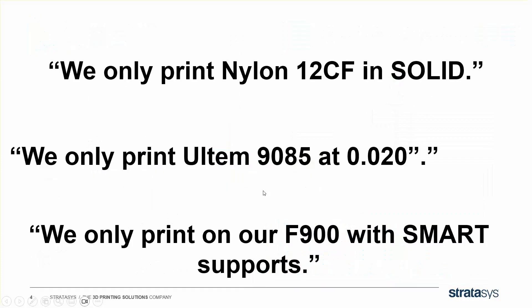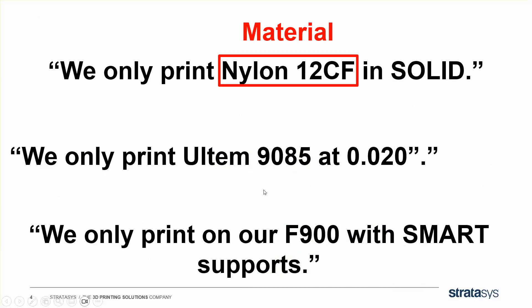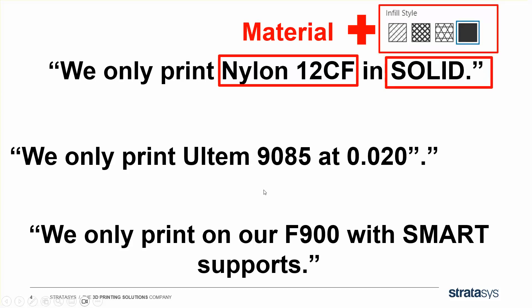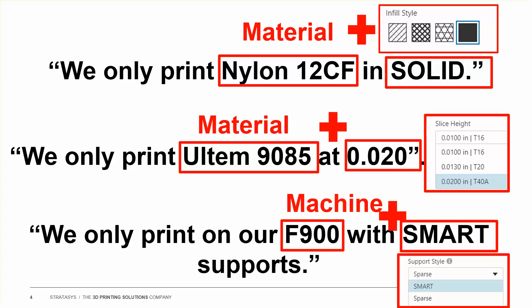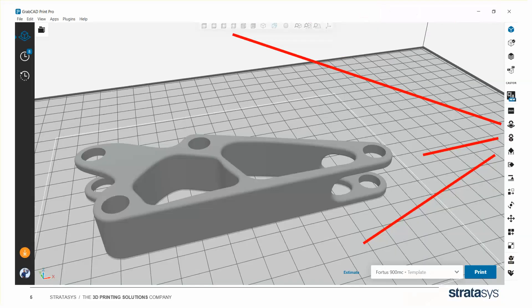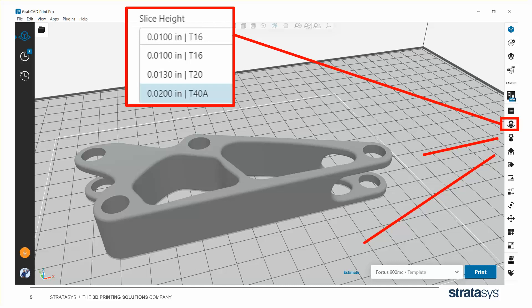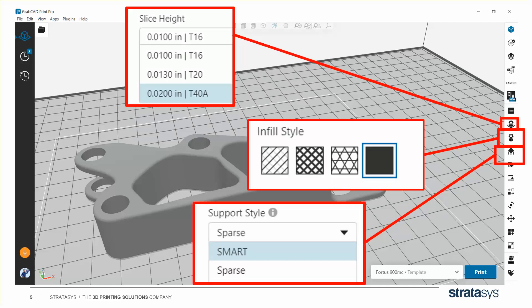Let's take a look at those three rules again. What are we really controlling in each case? In the first one we're controlling a material plus infill settings, in the second a material plus layer height, and in the third a machine plus support settings. If you look at GrabCAD Print, those settings are typically found on the right-hand side menu — that's what we're going to be controlling through Manufacturing Templates.